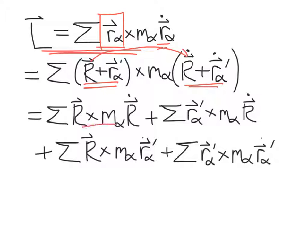The first term is the position of the center of mass vector crossed into the mass of particle alpha multiplied by the velocity of the center of mass. This sum is taken over alpha, but these vectors don't depend on alpha at all — only the mass does. So we'll see that leads to some simplifications.